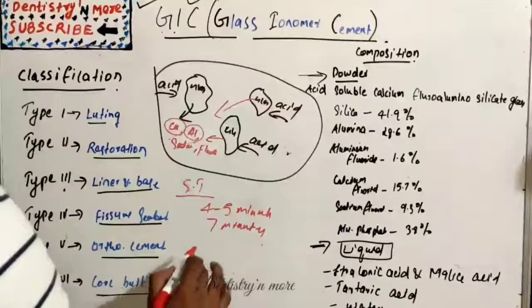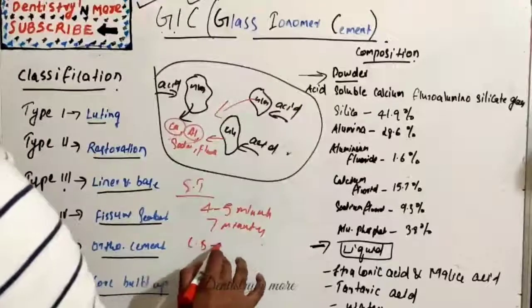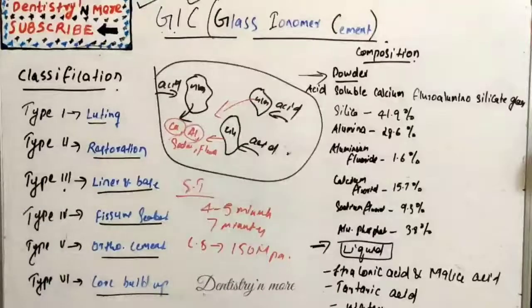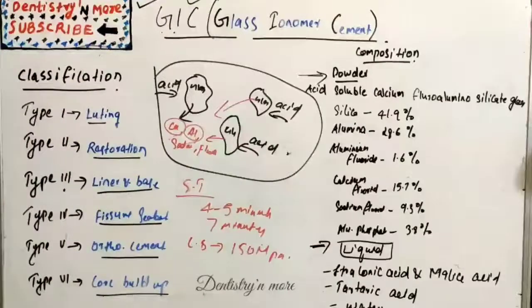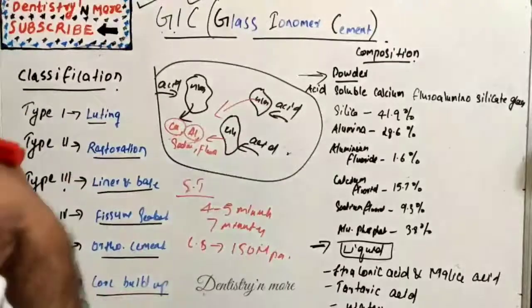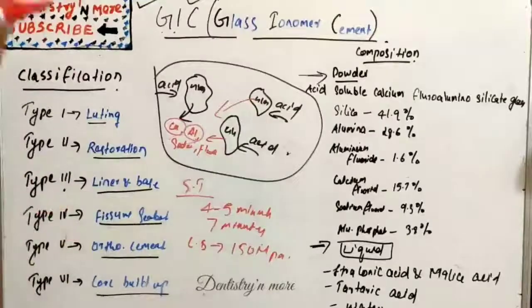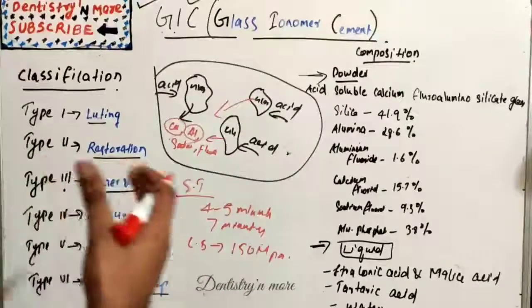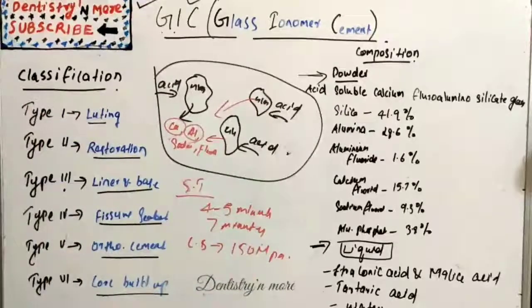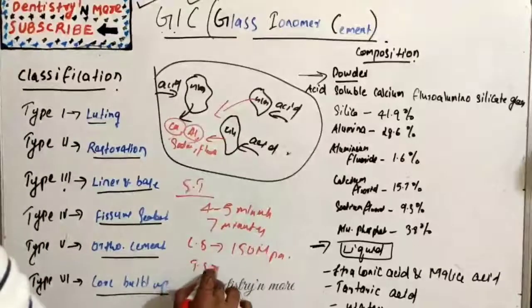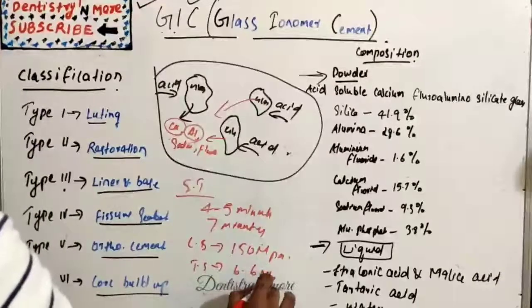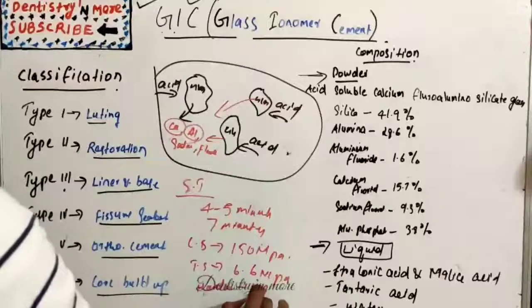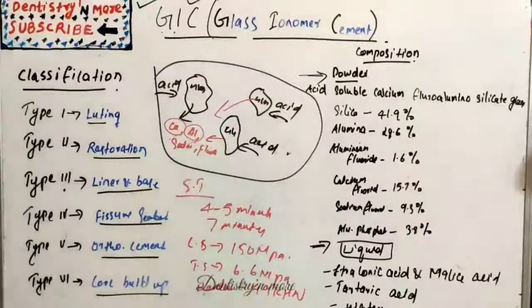Its basic properties: compressive strength is 150 megapascal, but in recent times the compressive strength of GIC has improved so much because of newer technology and newer incorporation of other materials combining with GIC, improving this compressive strength almost similar to our amalgam. Tensile strength is 6.6 megapascal and hardness is 49 KHN, that is Knoop hardness number.